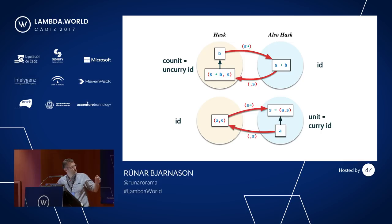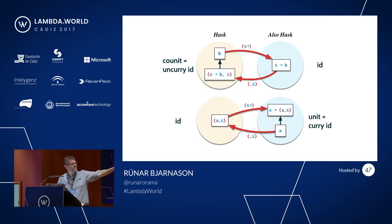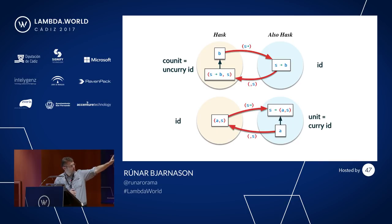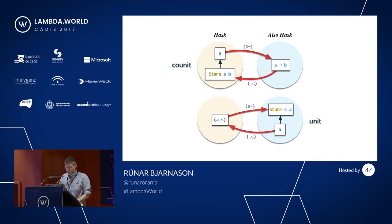The unit takes an A and gives us a function from S to pair of A with S. It will take the A, take the S, and pair them up. On the other side, we will have a function from S to B and an S, and we'll pass that S to the function to get a B. People familiar with Haskell might recognize the type signature S to pair of A with S — this is the state monad. So this becomes the unit for the state monad: we can go from A to a state machine that just returns that A and does not track any state.